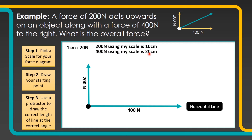To work out the overall resultant force, which is going to be up to the right, I'm going to draw a dotted line parallel to my horizontal line at the bottom, across from the top of this force to the right. So I'll draw a little dotted line going across.